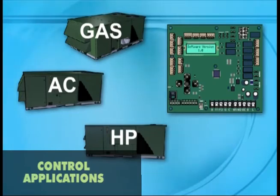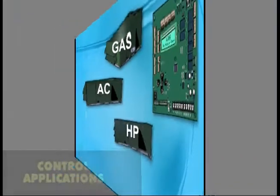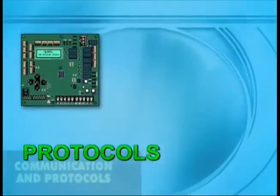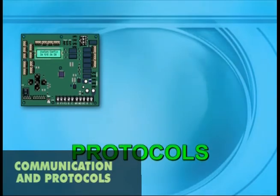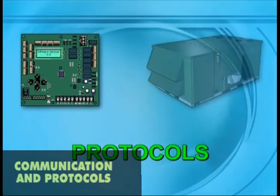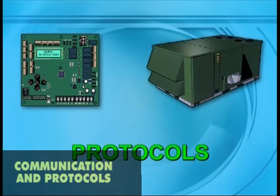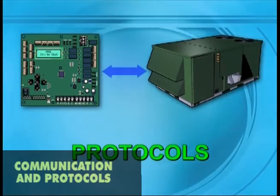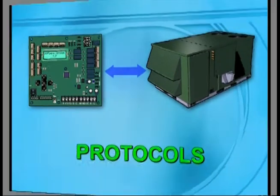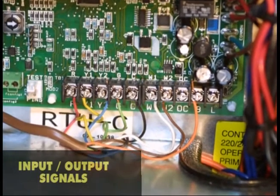The digital data follows a set of language rules called a protocol. A communication protocol is a method of transmitting binary data between devices, each of which are assigned a unique digital name. The control may use conventional thermostat connections as well as zone temperature sensors.